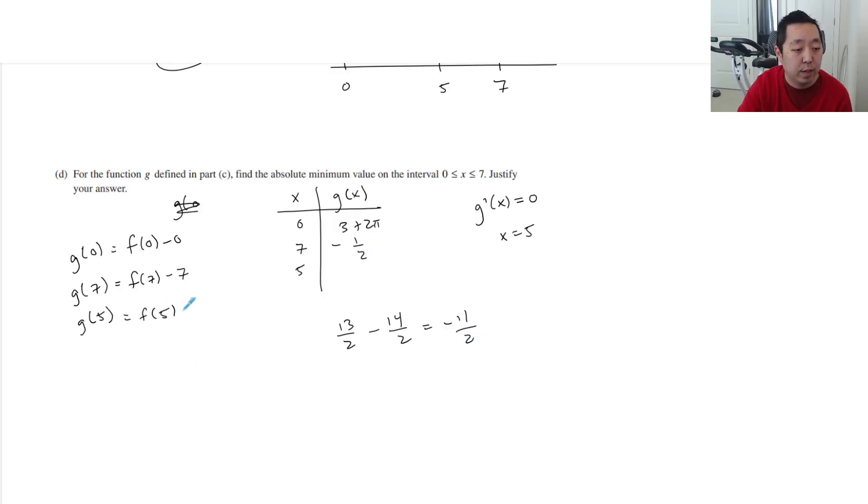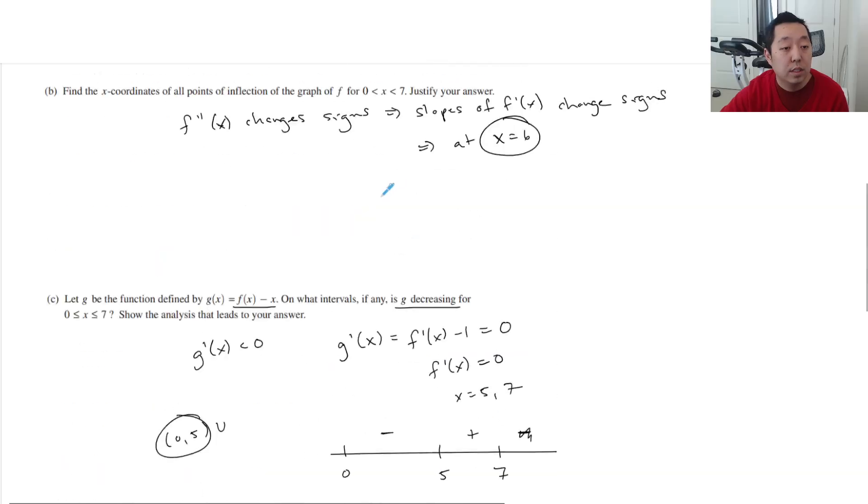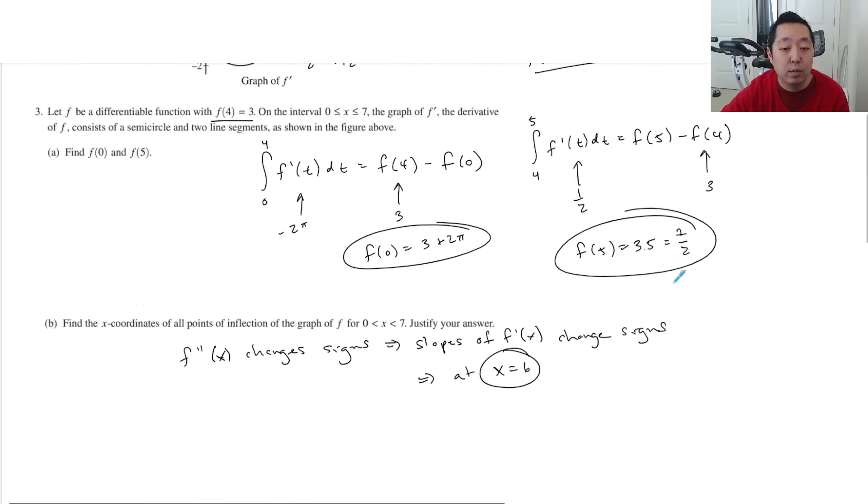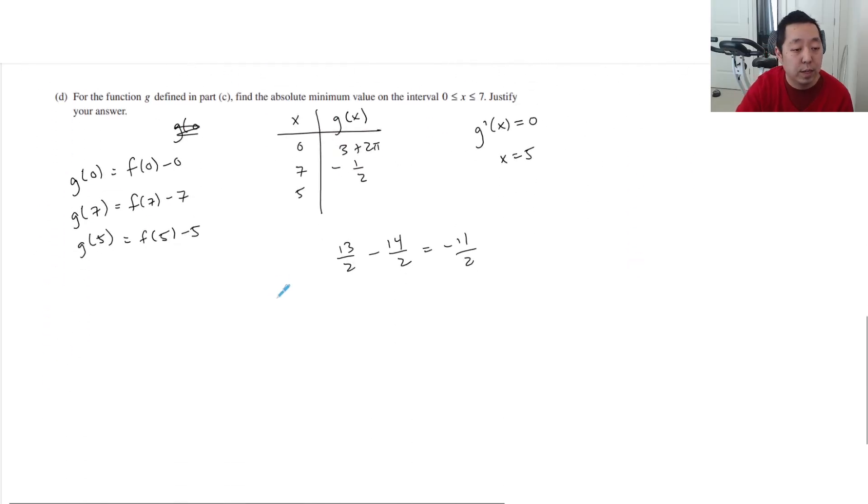And then finally, g of 5 is f of 5 minus 5. So f of 5, we found, was 7 halves. So 7 halves minus 5, which is 10 halves, is negative 3 over 2. And they want you to not find where it's at, but find the absolute minimum value. That's here. That's the minimum value right there.